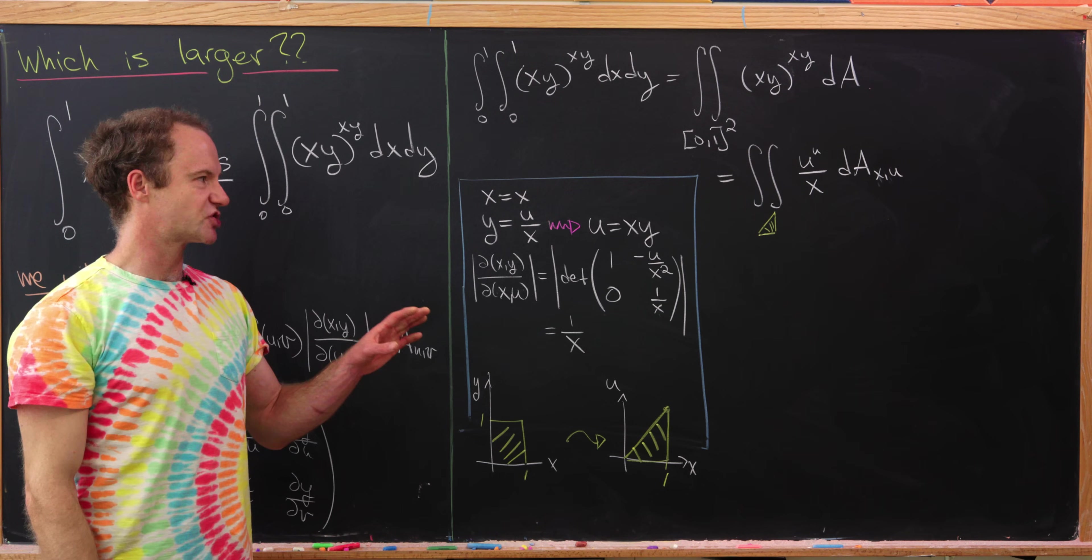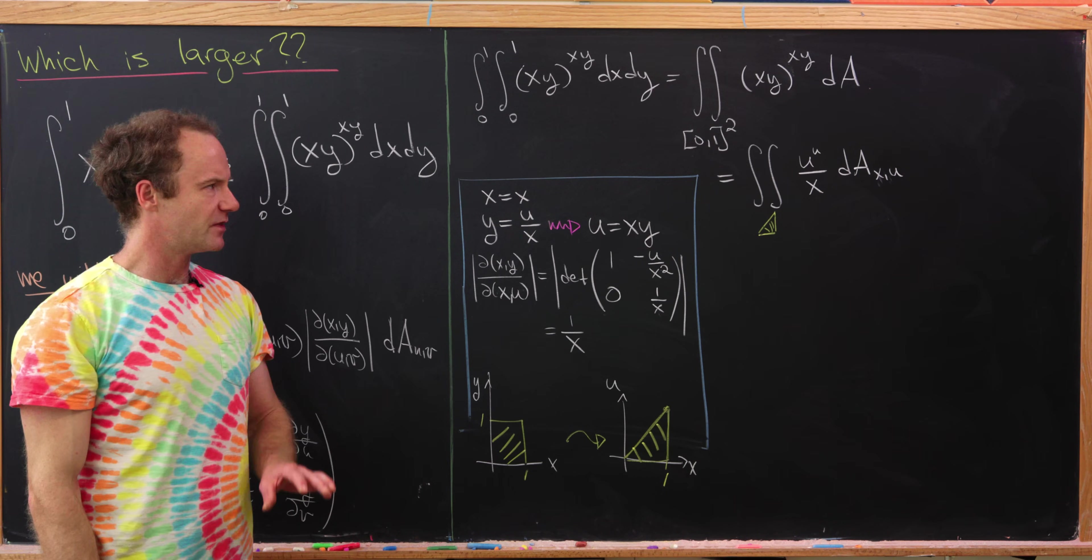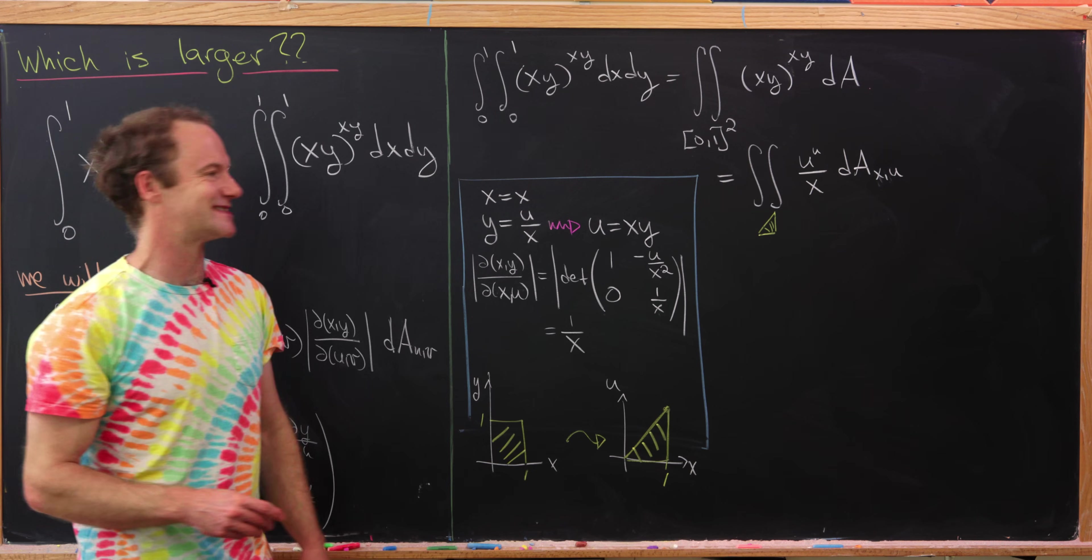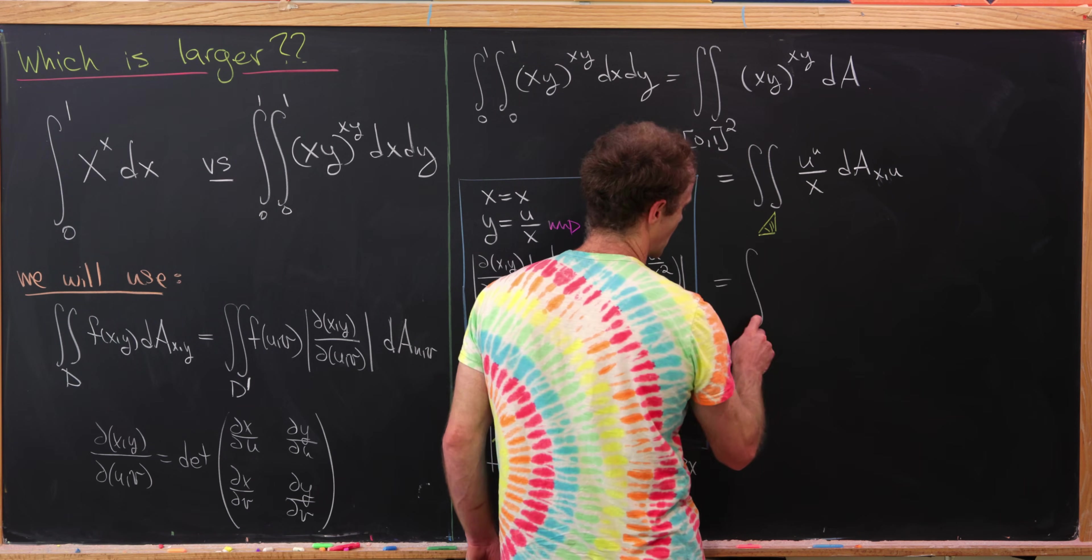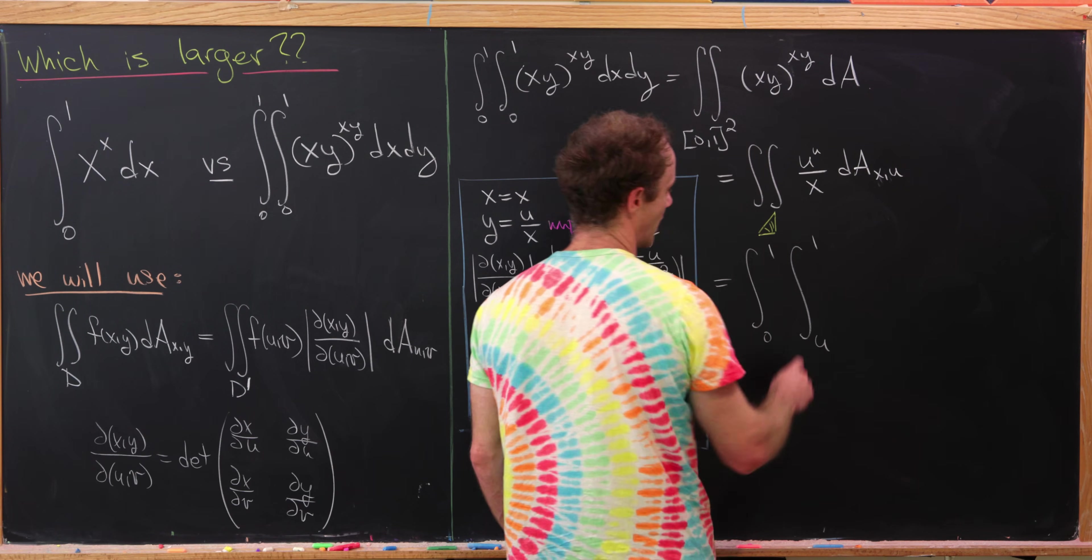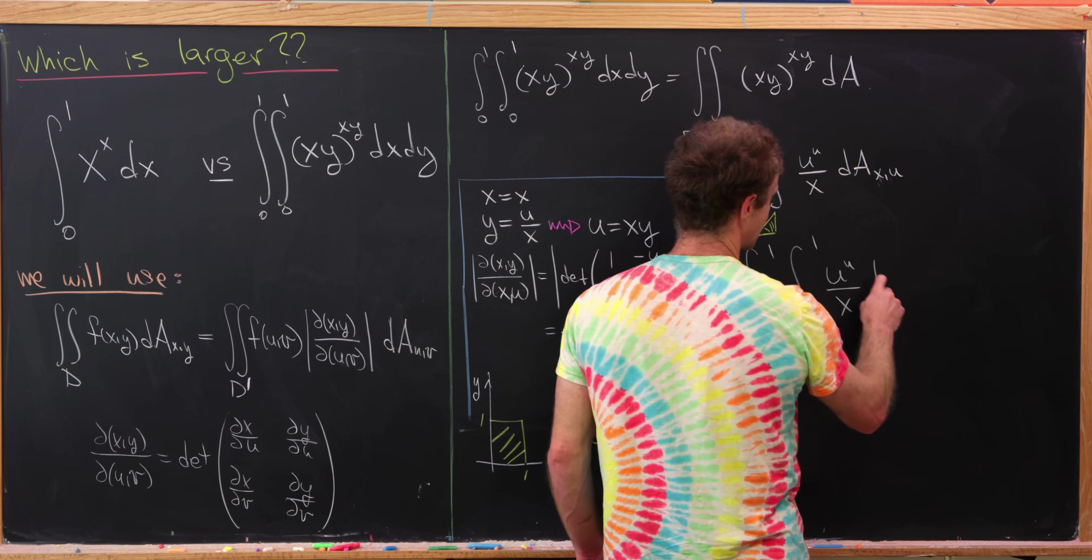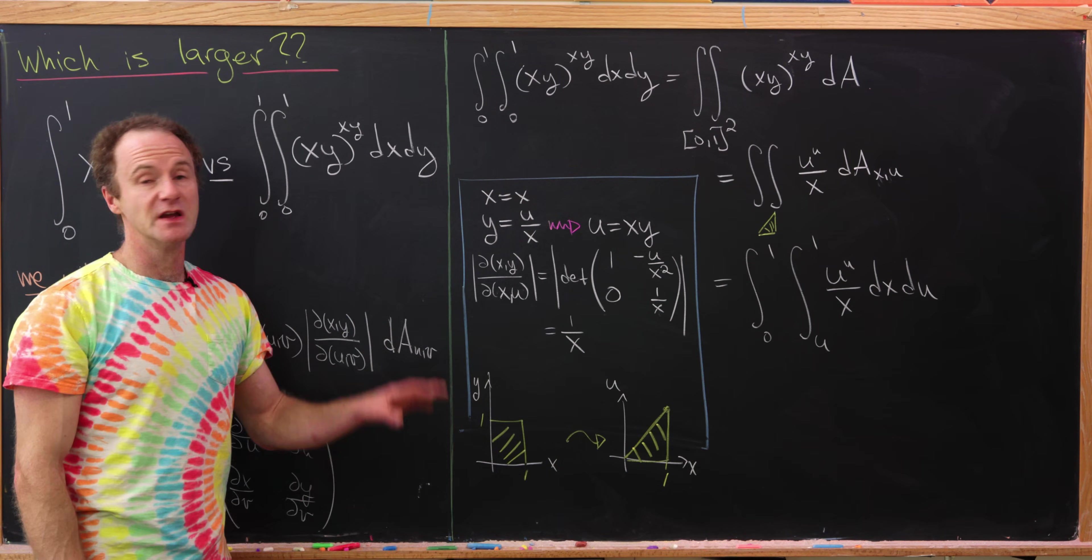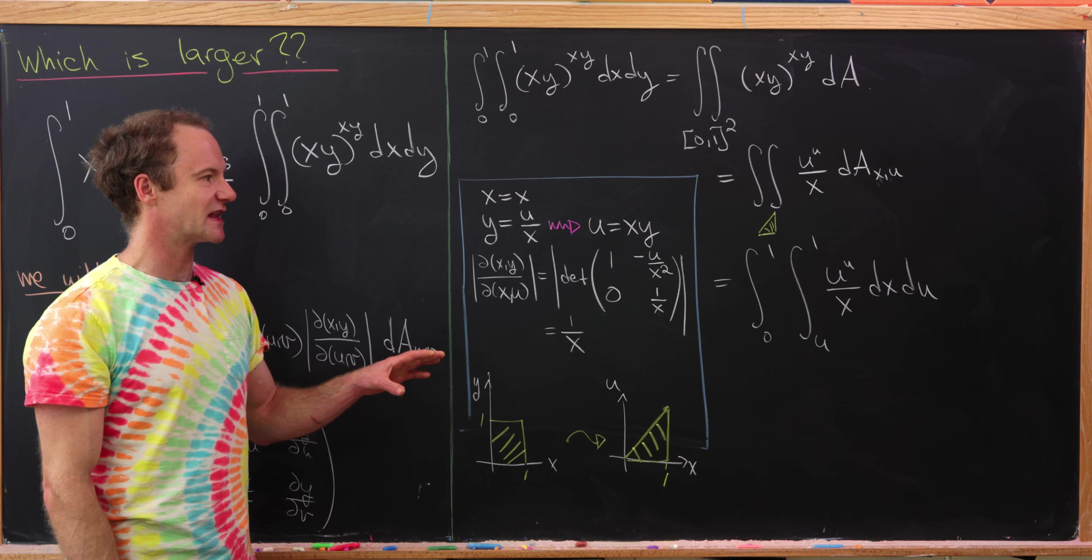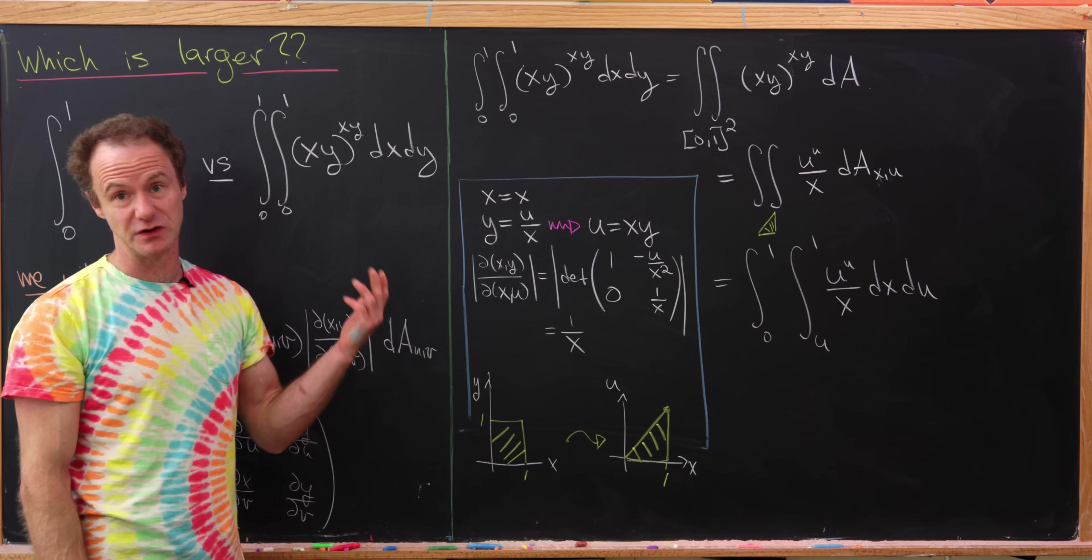But now what we need to do is translate this double integral to an iterated integral. And the trick is to do it in an order that makes the integration simple. We'll have the integral from 0 to 1 and then the integral from u to 1 of u to the u over x, and then dx du. That'll be the way to do it most simply, and that's pretty clear because we'd like to do an x integral given the fact that we can't really do the integral of u to the u.